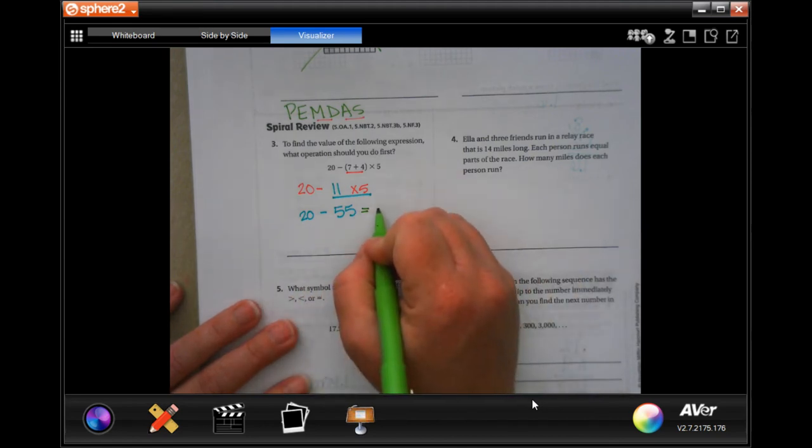Now, I have no exponents. My multiplication and division. Well, that's this one. So, 20 minus 11 times 5. Well, 11 times 5 is 55. So, now, we're going to have 20 minus 55. Going backwards into negative numbers, 20 minus 55 will get you negative 35.